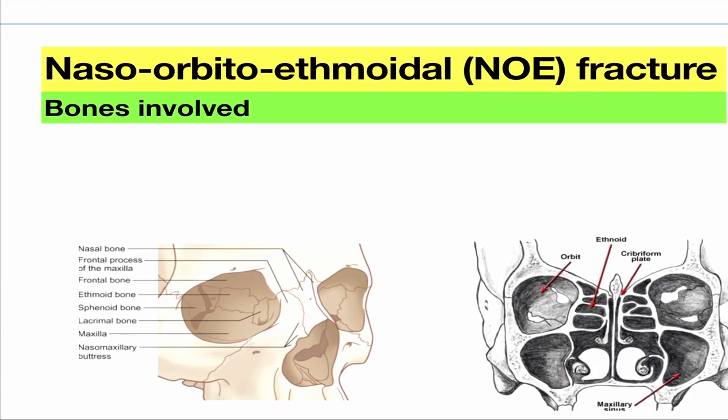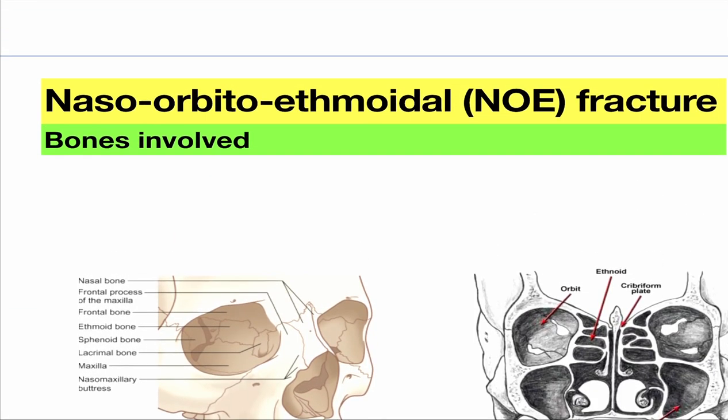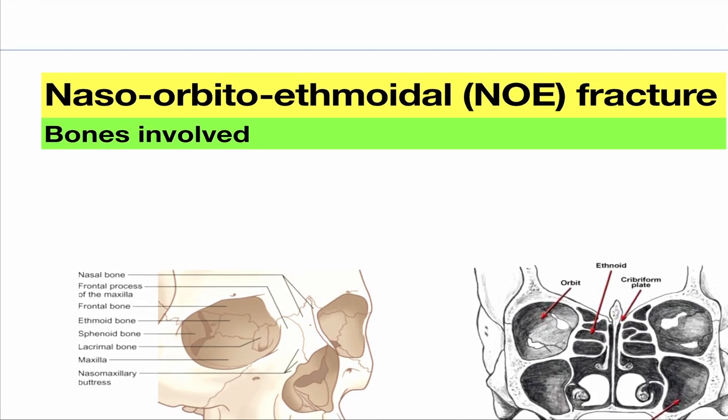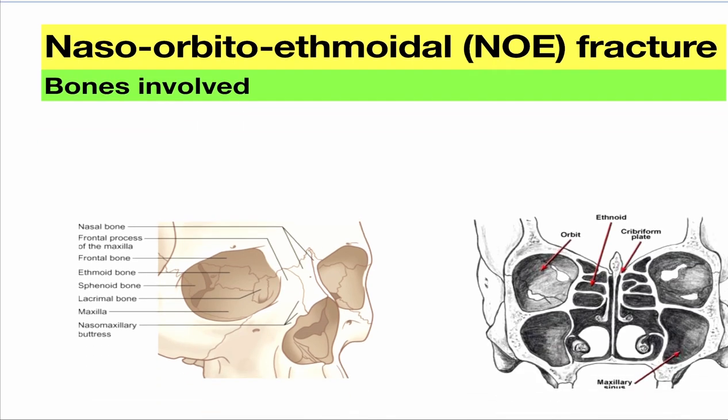The NOE fracture — you have to understand, before the bowstring test, you have to understand the anatomy. So in NOE fracture, what is NOE fracture? That is naso-orbito-ethmoidal. So where exactly is the nasal, where exactly is orbital, and where is ethmoidal?